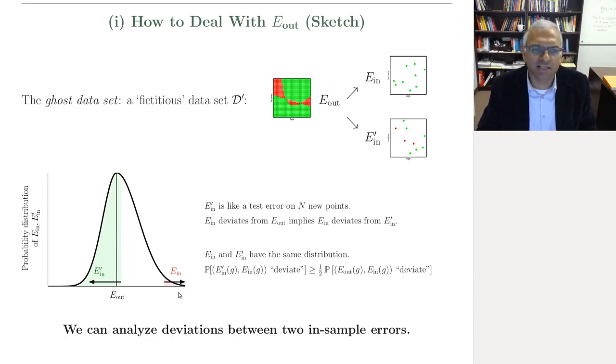E_in prime is just another data set, and when you evaluate, it's like a test data set in some sense, and when you evaluate g on E_in prime, it's going to oscillate around E_out.